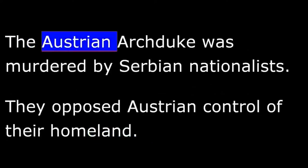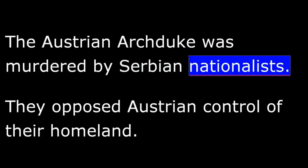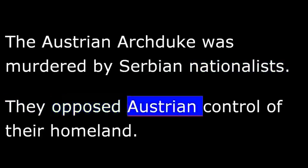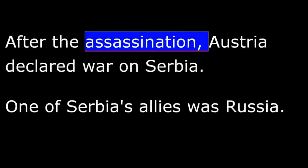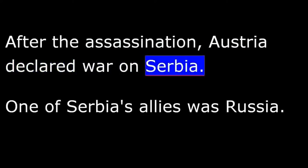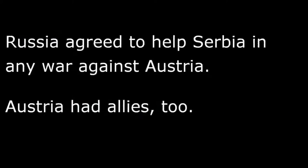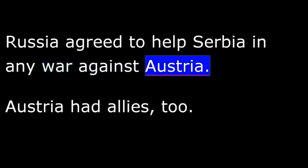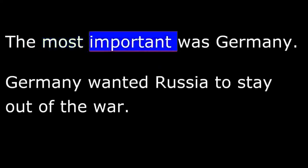The Austrian Archduke was murdered by Serbian nationalists. They opposed Austrian control of their homeland. After the assassination, Austria declared war on Serbia. One of Serbia's allies was Russia. Russia agreed to help Serbia in any war against Austria. Austria had allies too. The most important was Germany.